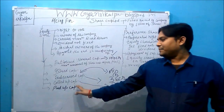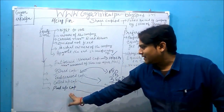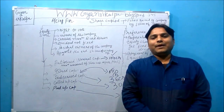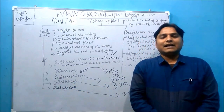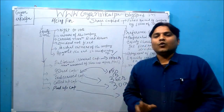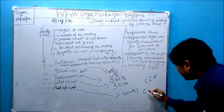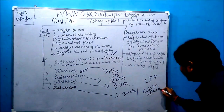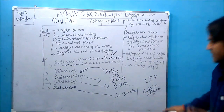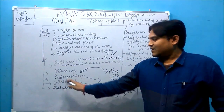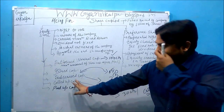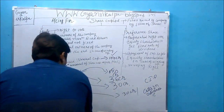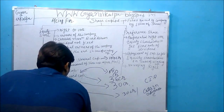Can called up capital be equal to paid up capital? Of course — called up capital and paid up capital can be equal, but paid up capital can generally never be greater than called up capital. However, in certain cases when shareholders make payment in advance, paid up capital becomes greater than called up capital, and that advance part goes into the calls in advance account. When some allottees make default in payment of the called up amount, such default amount goes into the calls in arrears account.